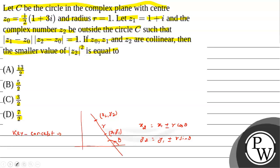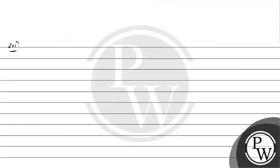So first, we have a circle in the complex plane with center z0, which is 1/2(1 + 3i), that is (0.5, 1.5), and radius equal to 1 unit. So we will make a circle.